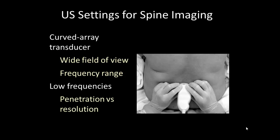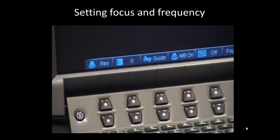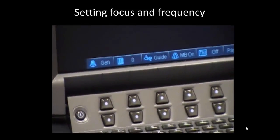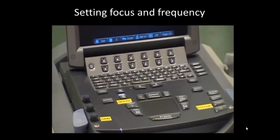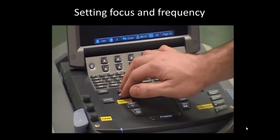A low-frequency curved array ultrasound probe is recommended for scanning the adult lumbar spine, particularly in obese patients. The structures of interest are located deep to the skin and low frequencies are necessary for adequate penetration. The wide field of view of a curved array facilitates recognition of the anatomy. The frequency of the probe should be set to the low range, and the focus and depth also set appropriately. An initial depth setting of at least 8 cm is usually required.